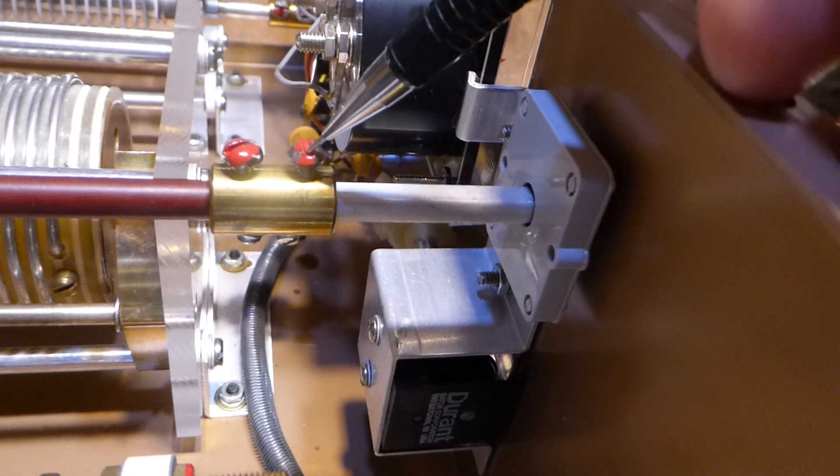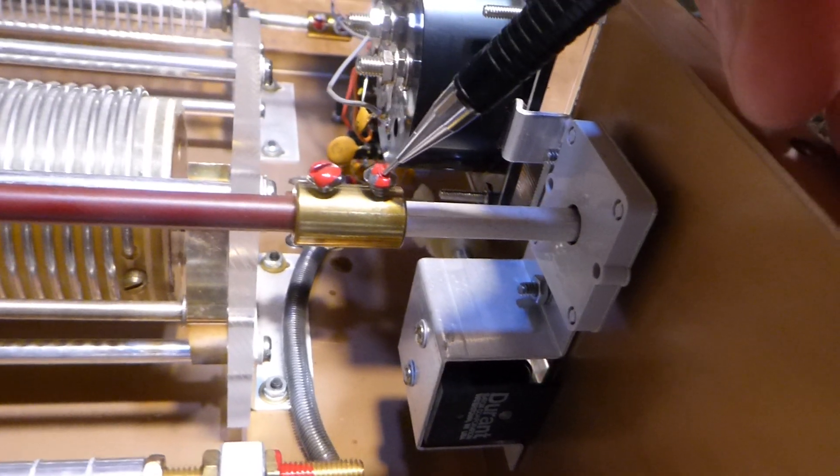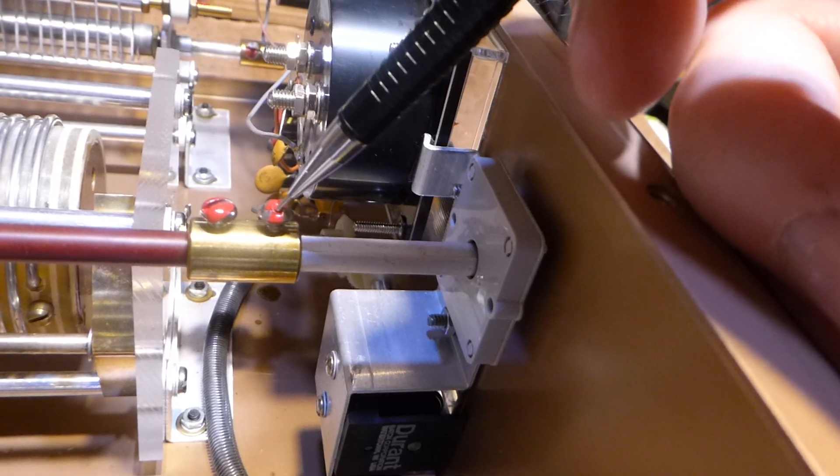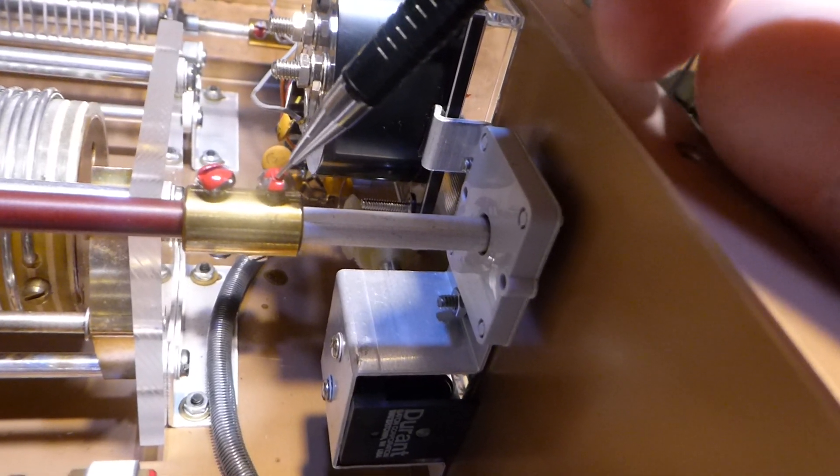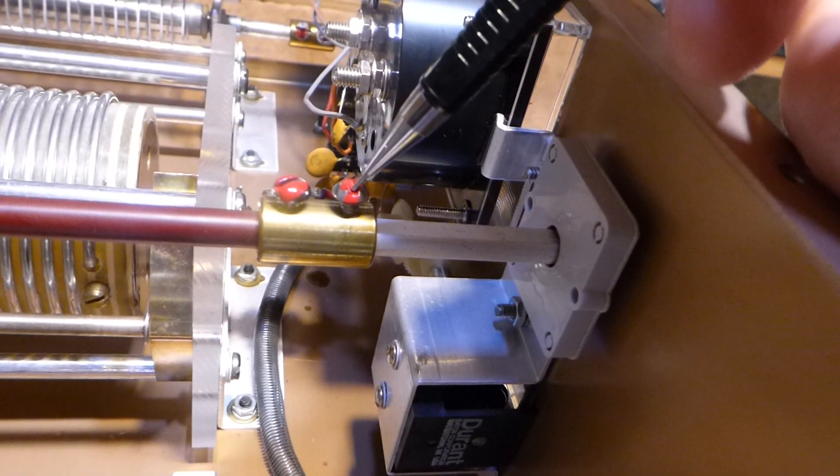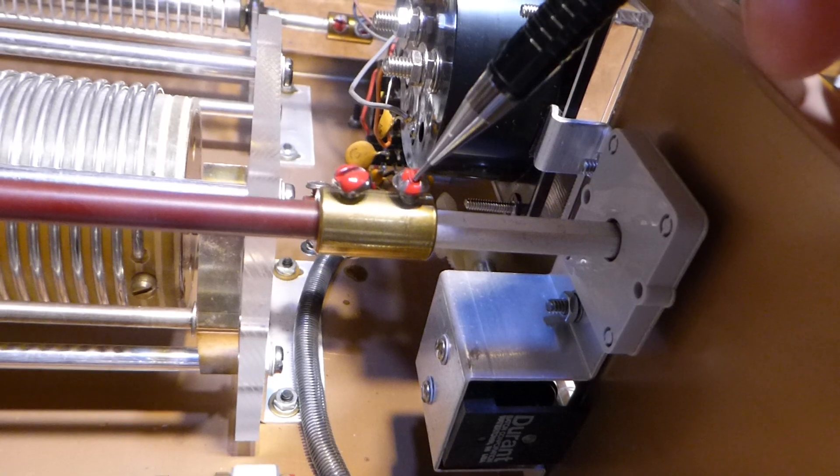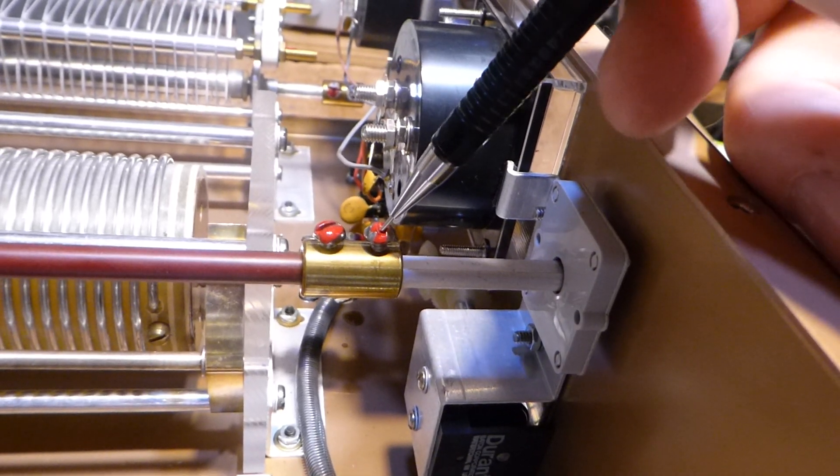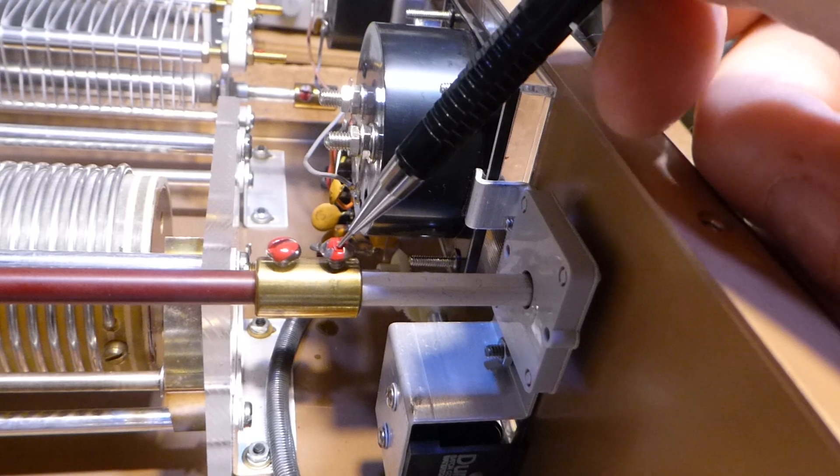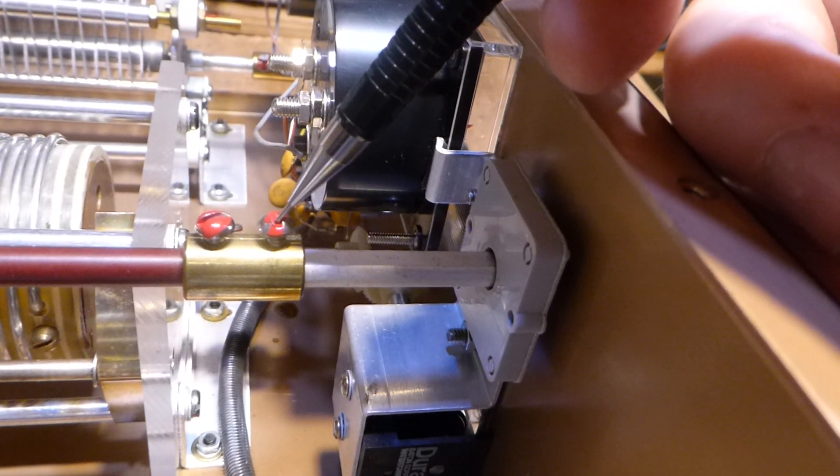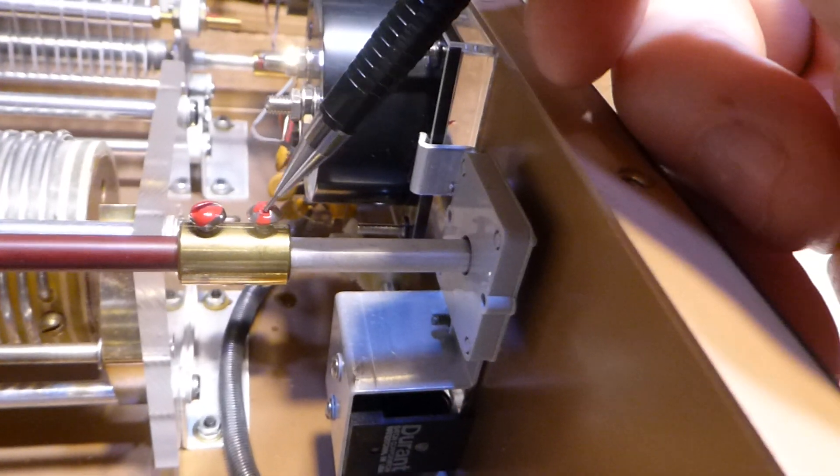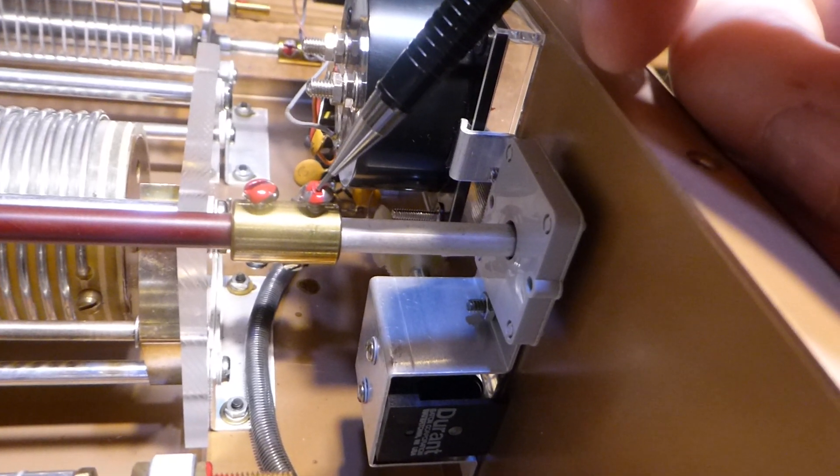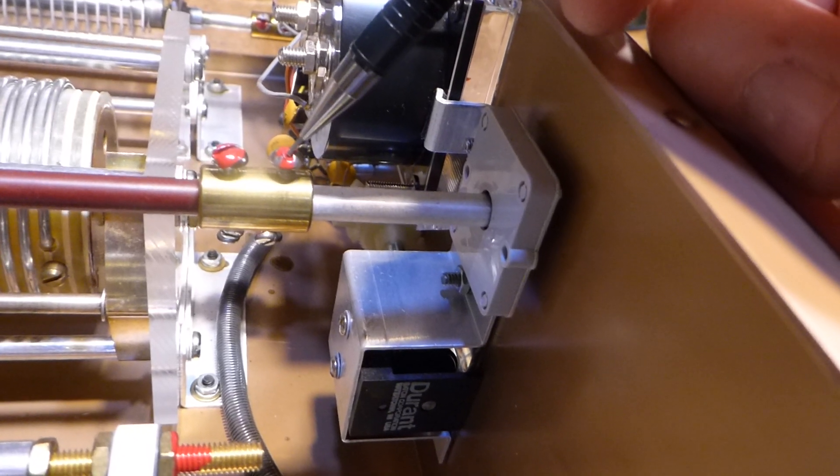This was a problem we were well aware of when I worked in the Heathkit service department. I was in the service department for two years, then promoted to engineering for two years. In the service department, the first thing we found wrong with Heathkits was bad soldering. The second thing was loose hardware. The third thing was the wrong parts: resistors in the wrong place, diodes in backwards, capacitors in backwards, wrong parts installed somewhere.